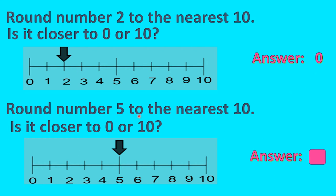Now let's see another example. Round number five to the nearest ten. Now is it closer to zero or ten? When we look at the number line we can clearly make out that this number five is exactly in between zero and ten — that means it is halfway between zero and ten. So in this case we round it to the higher ten. Remember: when you have a number which is exactly in between two tens, we round it to the higher ten.